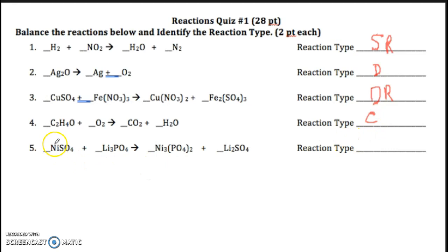And finally, we have a nickel sulfate and a lithium phosphate, making a nickel phosphate and a lithium sulfate. This is another compound, compound, making a compound, compound, or a double replacement. I did not give you a synthesis on this top portion. Do not assume that since we have gone over five types of reactions and there are five problems that there is one of each. I am not always so basic.